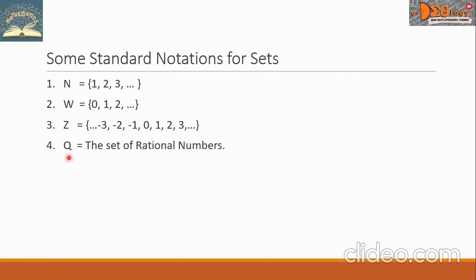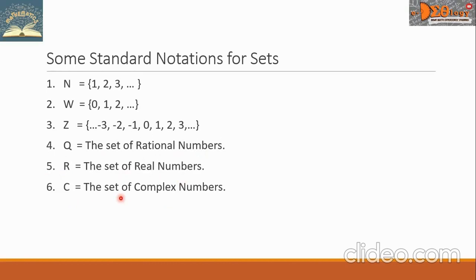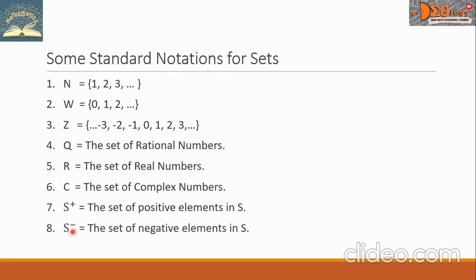Set Q is the set of rational numbers. Another set is R, the set of real numbers. Set C is the set of complex numbers. S with exponent plus is the set of positive elements in set S. S with exponent minus is the set of negative elements in set S. S with exponent asterisk is the set of non-zero elements in set S.